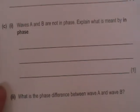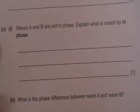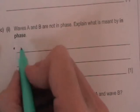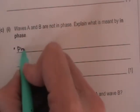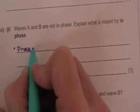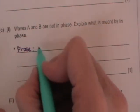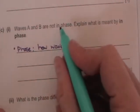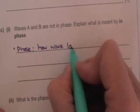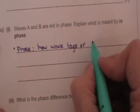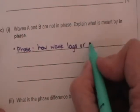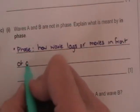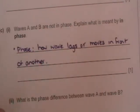So waves A and B are not in phase. Explain what is meant by phase. So again I haven't got a model answer for this but what I'm going to say is, the phase difference is how much a wave lags or moves in front of another.